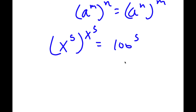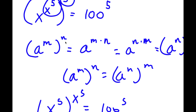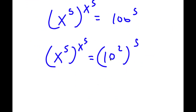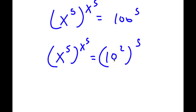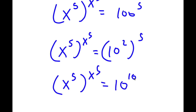Now, 100 is the same thing as 10 to the power of 2. So now I have x to the power of 5 to the power of x to the power of 5, equal to 10 to the power of 2 to the power of 5. Remember, a to the power of m to the power of n equals a to the power of m times n. So 10 to the power of 2 to the power of 5 equals 10 to the power of 10. So I have x to the power of 5 to the power of x to the power of 5, equal to 10 to the power of 10.